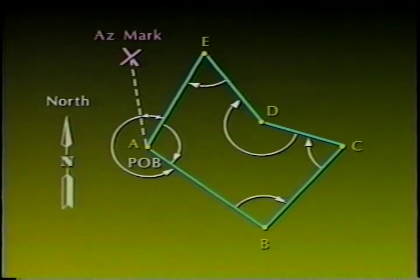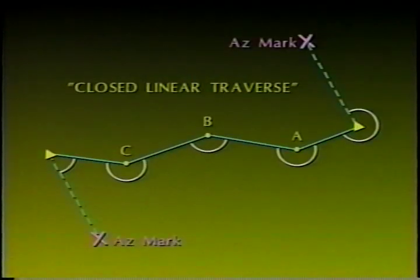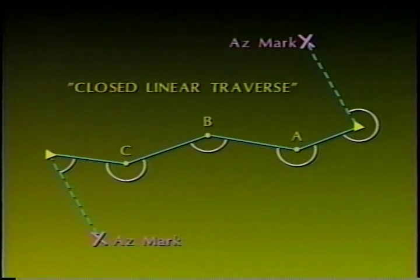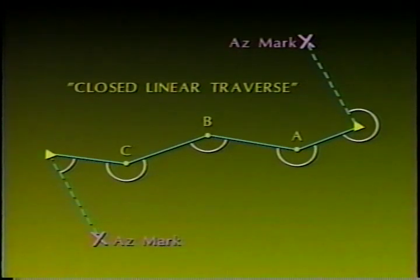The closed linear traverse starts and ends at different points of known value, and normally includes a closed station azimuth mark for angular closure. When no azimuth mark is available, the determining factor to the accuracy of the survey is the positional error of closure.